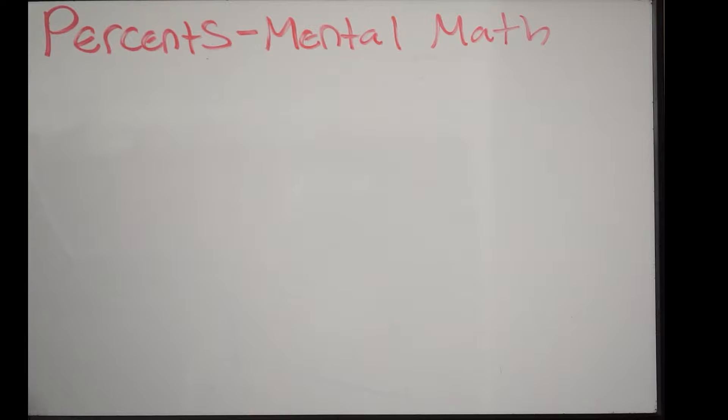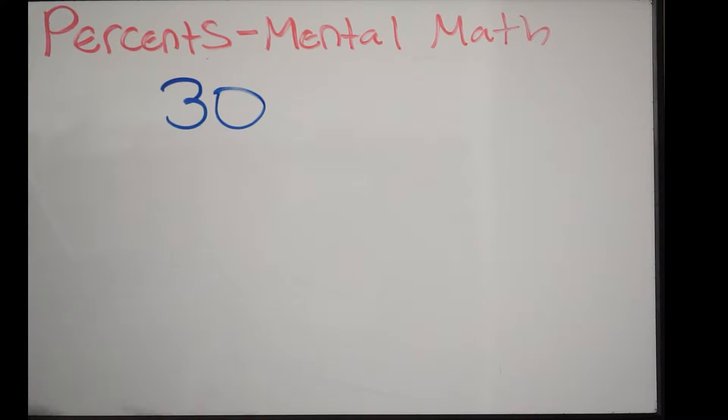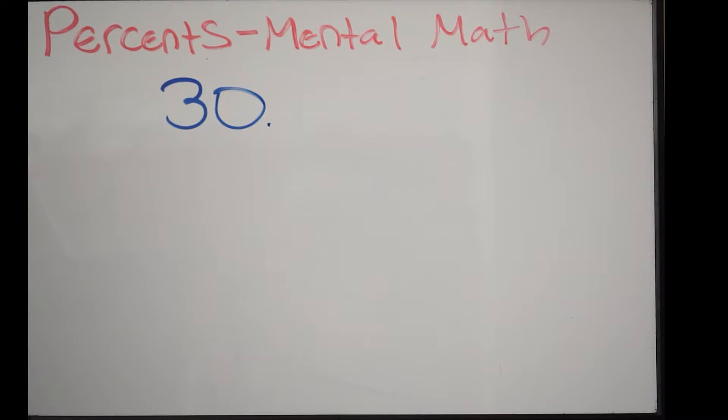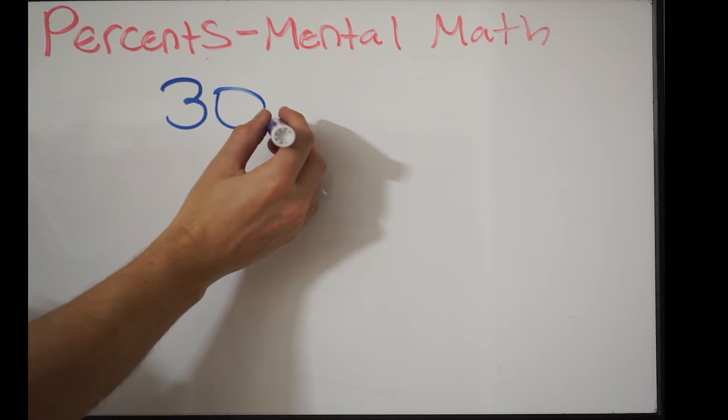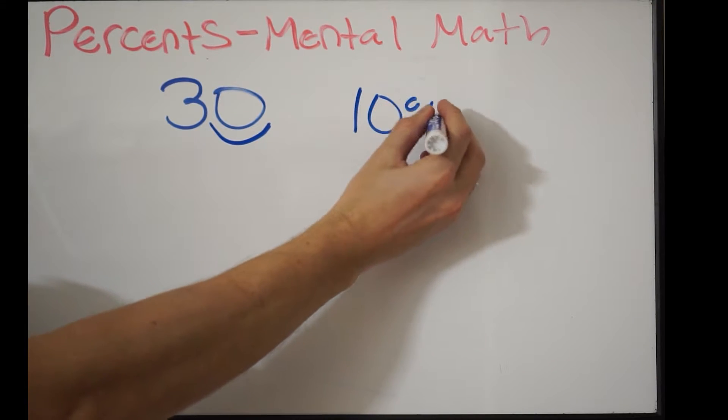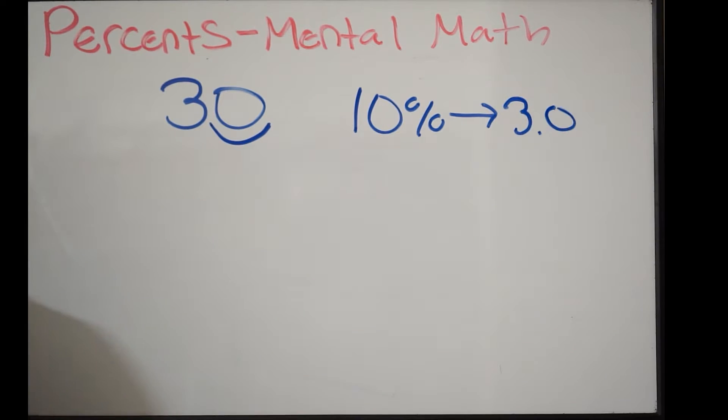Let's just start with the number 30. Let's say I want to take 10% of 30. This is very simple. There is a decimal point here. If I want to take 10% of 30, I simply just take this decimal point and I move it one place over to the left. So 10% of 30 is going to be 3.0.